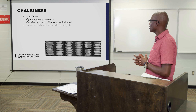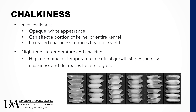Another factor that results in lower milling yields is the presence of chalked kernels. Chalk kernels are kernels that are opaque and have a white appearance. This chalk can affect portions of the kernel or sometimes the entire kernel. Increases in chalkiness have been found to reduce head rice yields. These chalk kernels form because of several reasons — it has been found that high nighttime air temperatures at critical growth stages increase chalk and therefore decrease head rice yield.